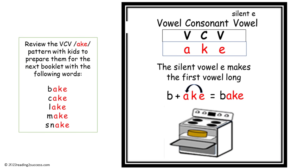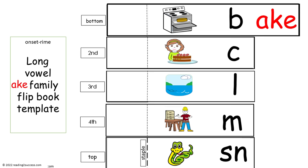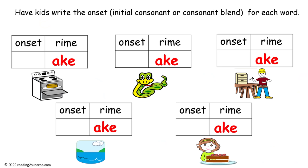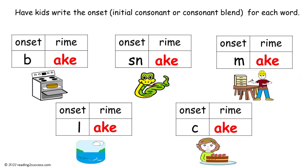Review the VCV pattern — in this case A-K-E — with kids to prepare them for the next booklet with the following words: bake, cake, lake, make, and snake. Remind kids that the rhyme stays the same but the onset of each word changes, making it a new word. This is a template for the A-K-E pattern booklet. Have kids write the onset — the initial consonant or consonant blend — for each word. This is a completed example.